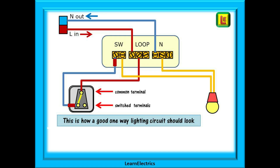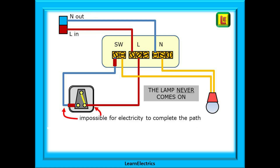Here is a good lighting circuit, fault free. Current can flow into the circuit through the loop, down to a switch terminal, through the switch to the common terminal, and up to the switch block. Current then travels along the lamp wire, through the lamp, and back to the neutral block. From the neutral block it then travels back to the consumer unit — if all this happens, the lamp will light up. Now look at this circuit: the two wires at the switch are connected one into each switch terminal but none in the common. Unless one of these is in the common terminal, nothing is ever going to happen. It is impossible for the electricity to complete the path back to the ceiling rose and the lamp will never light up.